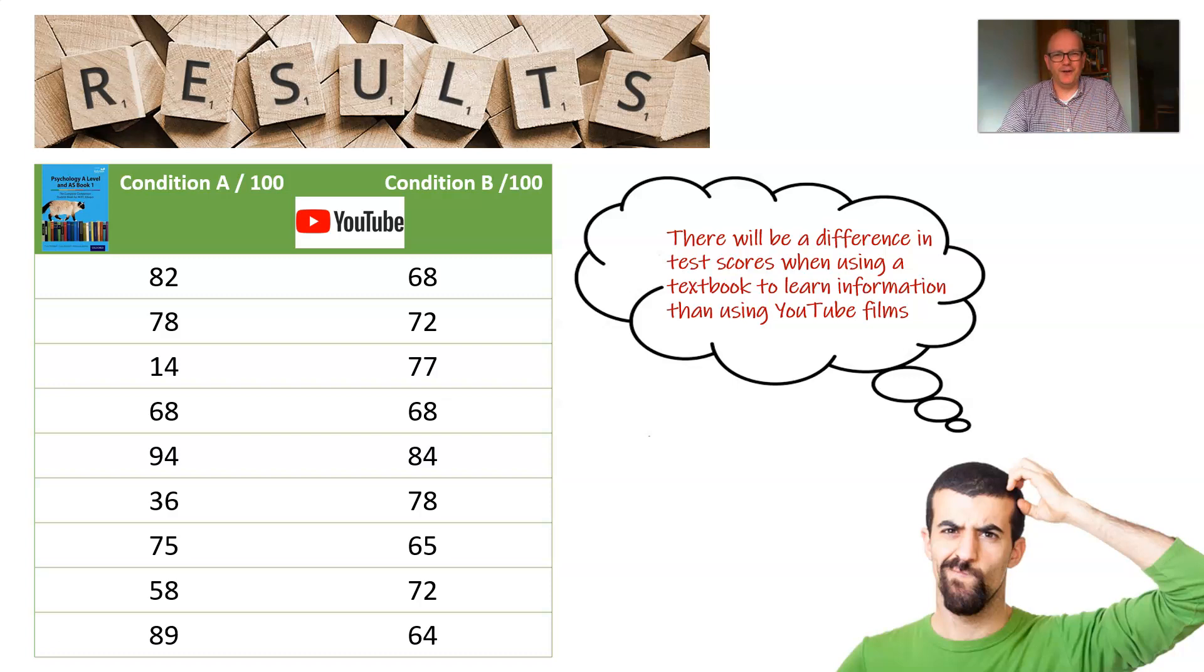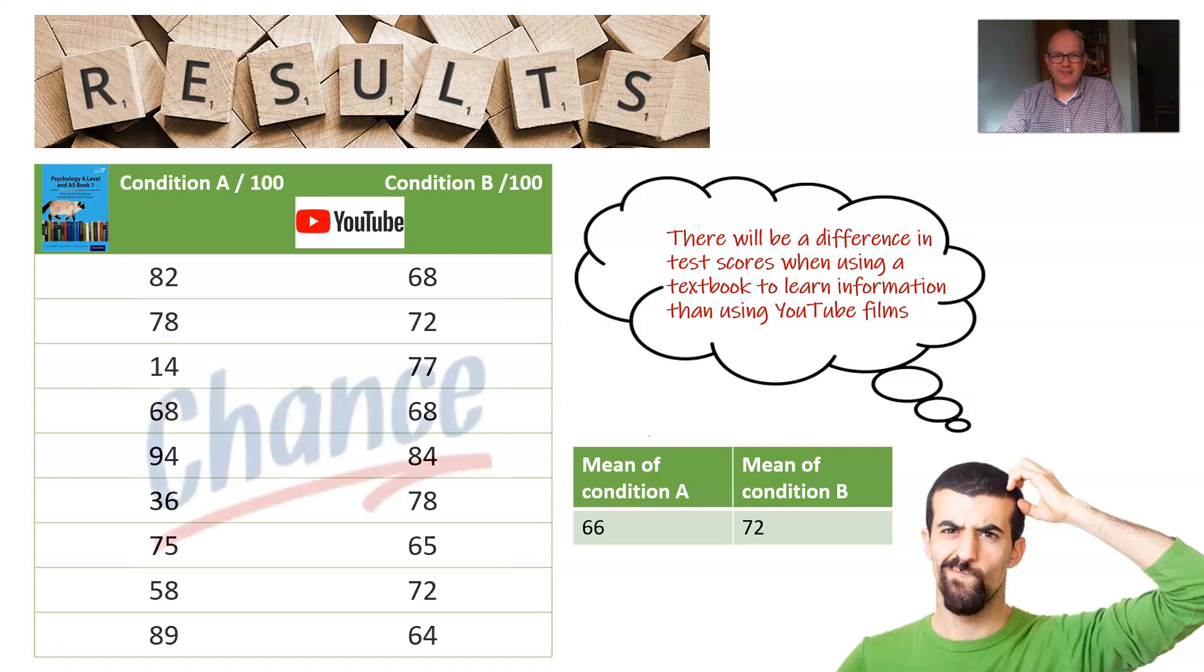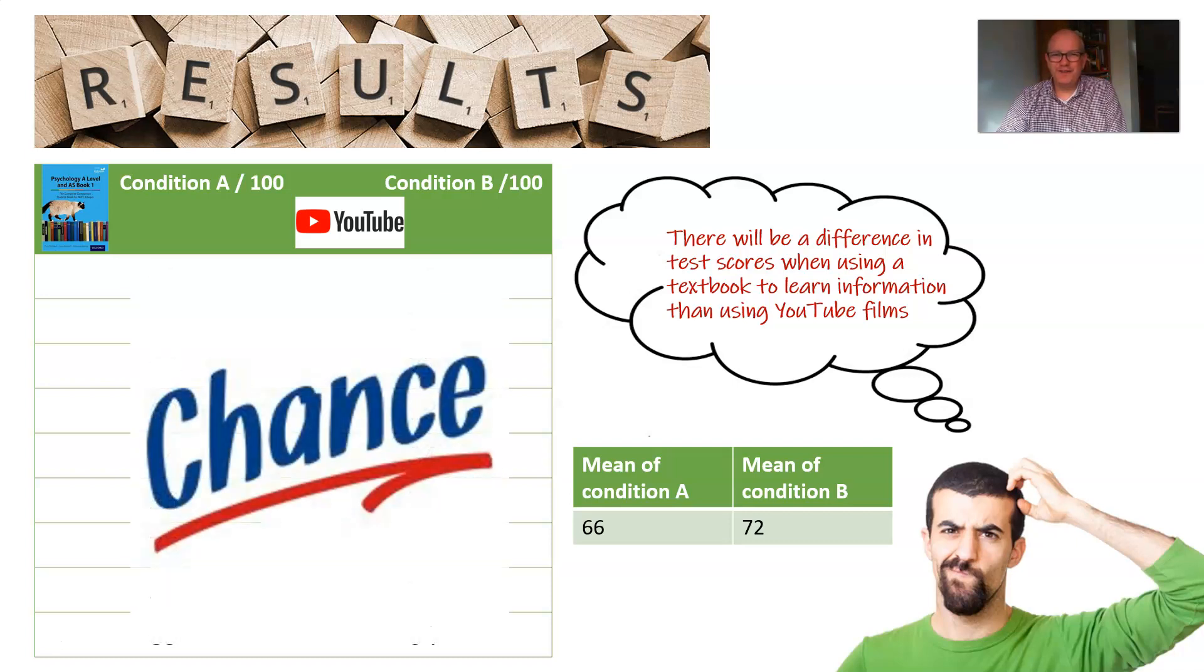I know I can use my descriptive statistics and find a measure of central tendency. So there we go, there's the mean data. I know now that on average, my textbook learners got 66 out of 100 and my YouTube learners got 72. Great. I've got some problems though, because I did use different students in both of my conditions. And you know what? The differences could have just occurred by chance, and I'm not sure if they did or not.